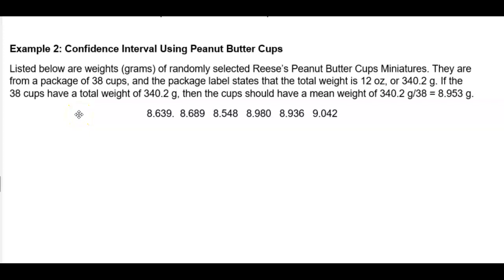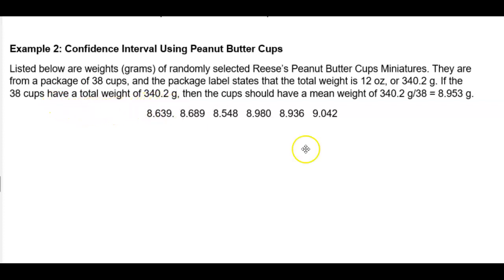Example 2: Confidence Interval Using Peanut Butter Cups. Listed below are weights of randomly selected Reese's Peanut Butter Cup miniatures. They are from a package of 38 cups, and the package label states that the total weight is 12 ounces, or 340.2 grams. If the 38 cups have a total weight of 340.2 grams, then the cups should have a mean weight of 340.2 divided by 38, which equals 8.953 grams.